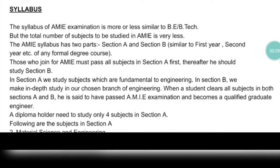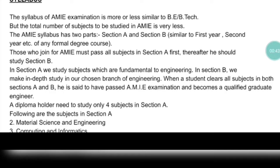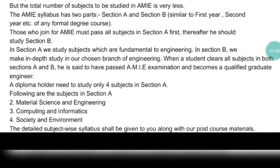Coming to the syllabus of AMI: it is more or less similar to BE or B.Tech. The number of subjects in AMI is fewer than in BE or B.Tech, but the syllabus of each subject is more or less the same. For example, a subject like Fundamentals of Design and Manufacturing from Section A may amalgamate two to three subjects within it. In total, if you are a diploma holder, you will have to pass 9 plus 4 — that is 13 subjects — which effectively cover more than 26 subject areas.